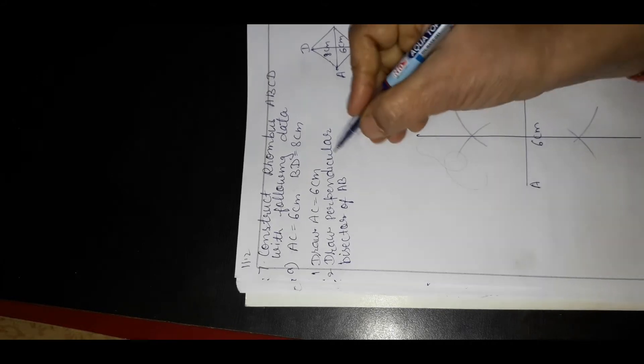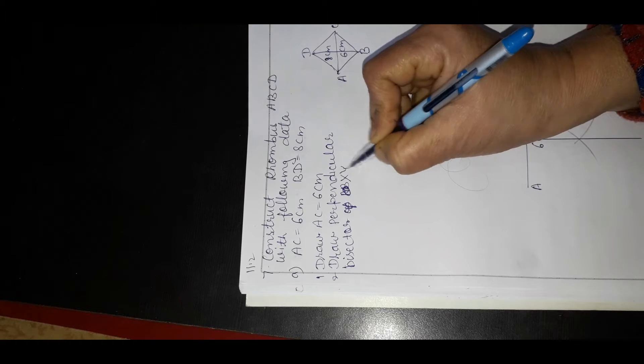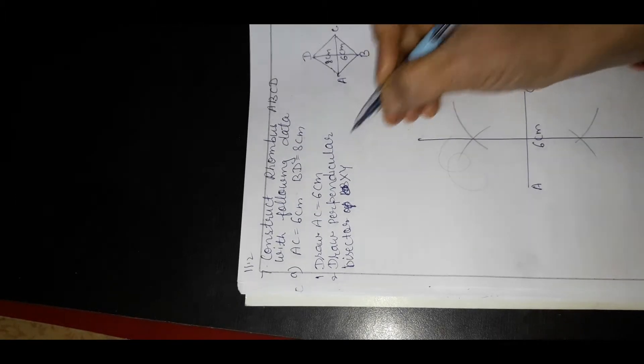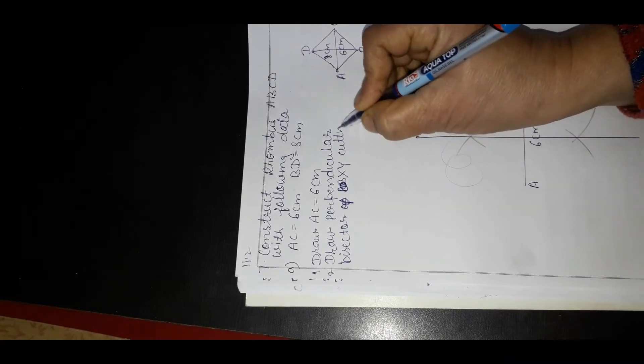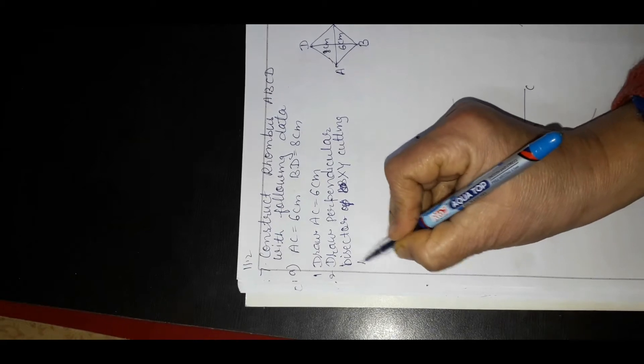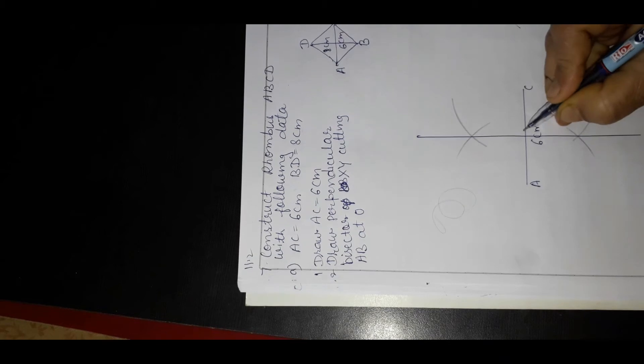Draw the perpendicular bisector XY of AC, cutting AC at O. This line is X on one end and Y on the other.